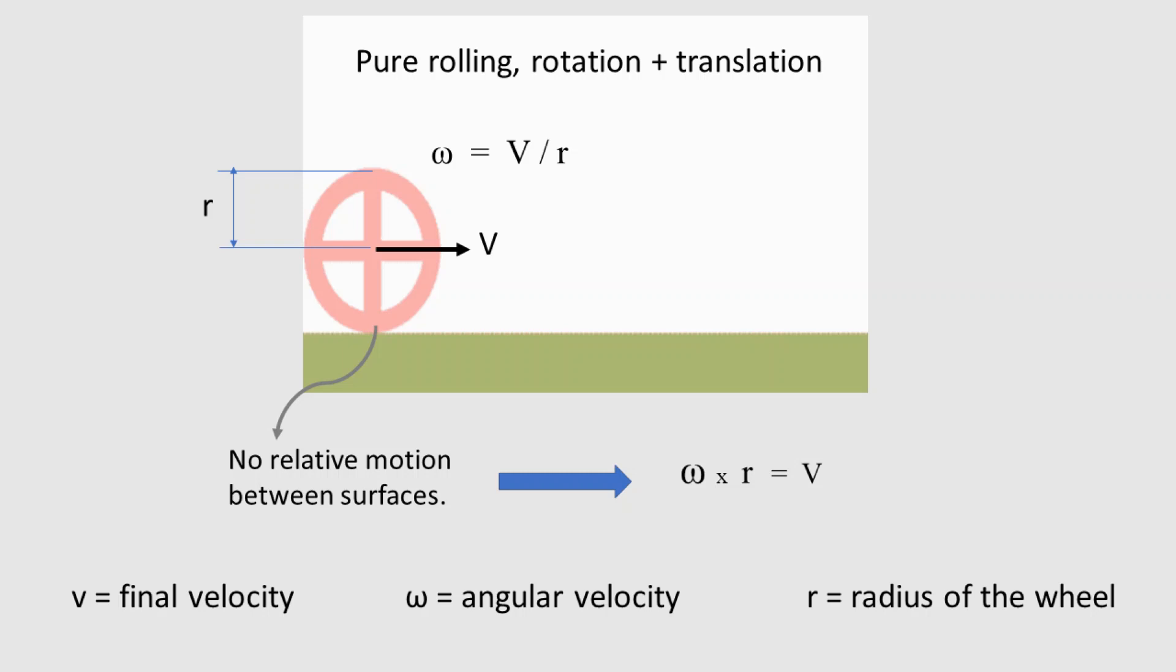So rolling is a combination of linear motion, that is translation, and rotational motion, such that the velocity at the point of contact is zero. This occurs only when the velocity at the contact due to the rotation, that is omega times r, is equal to the velocity of the center of the ball v, which is illustrated in the diagram shown.